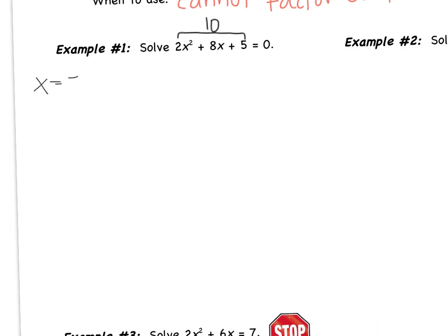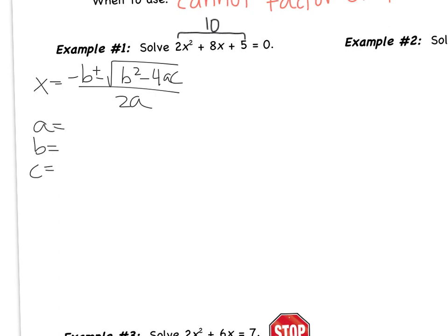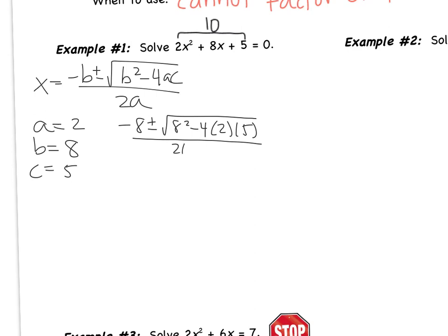The quadratic formula is the opposite of b plus or minus the square root of b squared minus 4ac all over 2a. a is what's in front of the x squared, which is 2. b is the coefficient of x, which is 8. And c is the constant term — the term that doesn't have an x — which is 5. Plugging in: negative 8 plus or minus the square root of 8 squared minus 4 times a times c, all over 2a. This becomes negative 8 plus or minus the square root of 64 minus 40, all over 4.